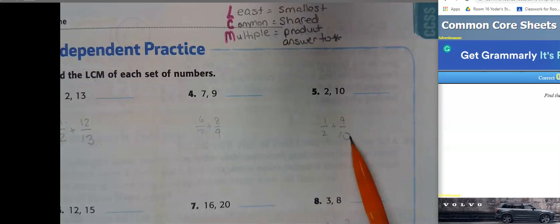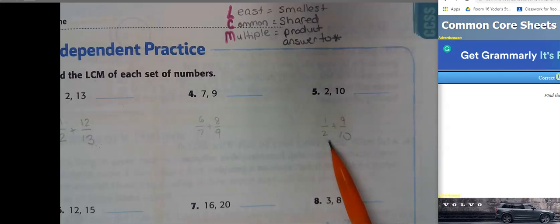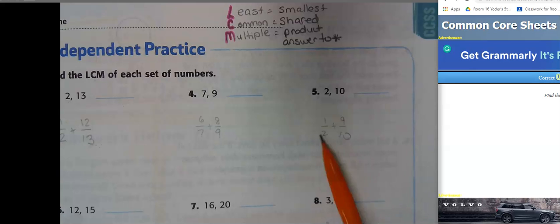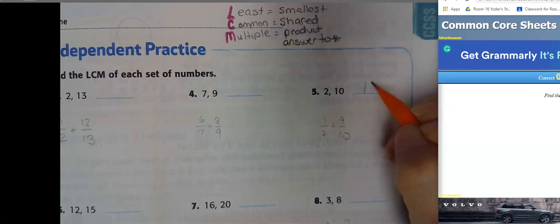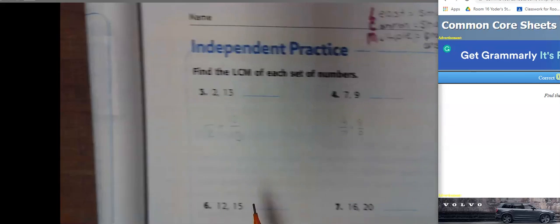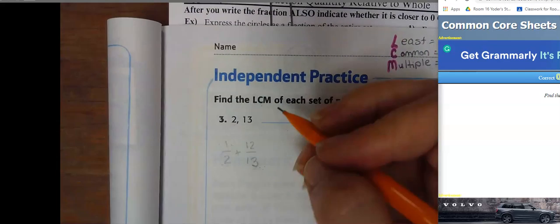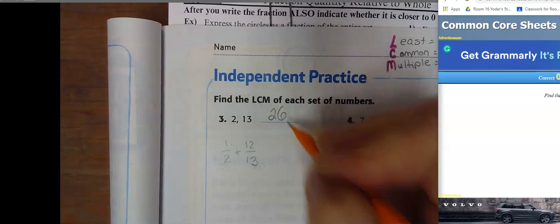2 and 10, their smallest shared answer to a multiplication problem. Since you can turn 2 into a 10 by multiplying, the least common multiple here is 10. Then, what about 2 and 13? The only way to get a common denominator, the smallest number that they have in common, is 2 times 13, which is 26.